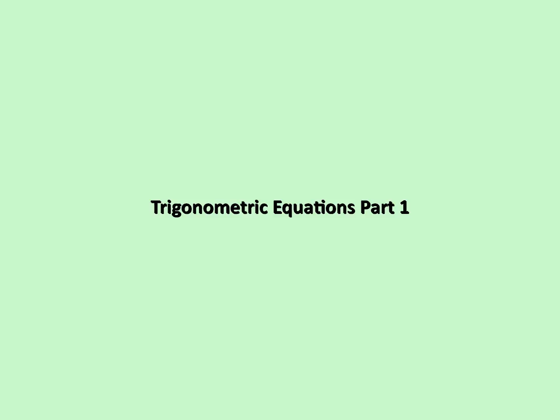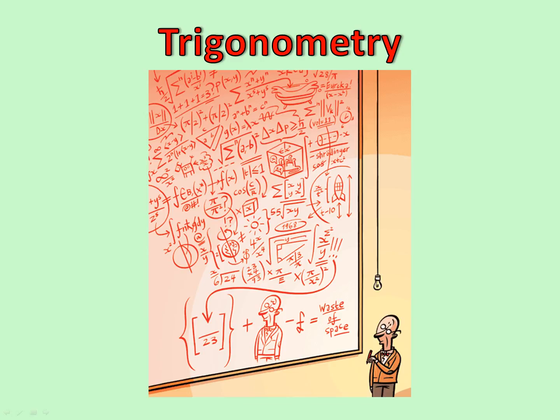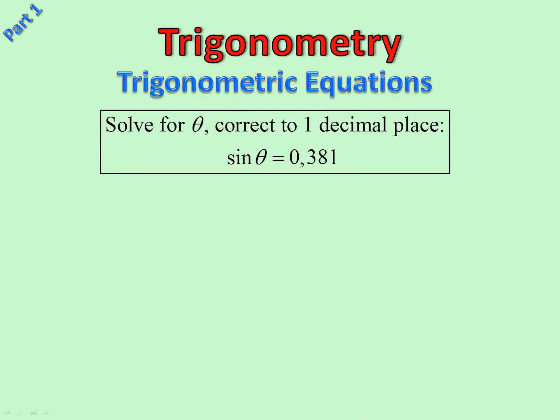Trigonometric Equations Part 1. Let's have a look at one. Straightforward: solve for θ correct to one decimal place, sin θ = 0.381. On the calculator, θ equals sin⁻¹(0.381), which gives us 22.3956 degrees, and that becomes 22.4 degrees to one decimal place.